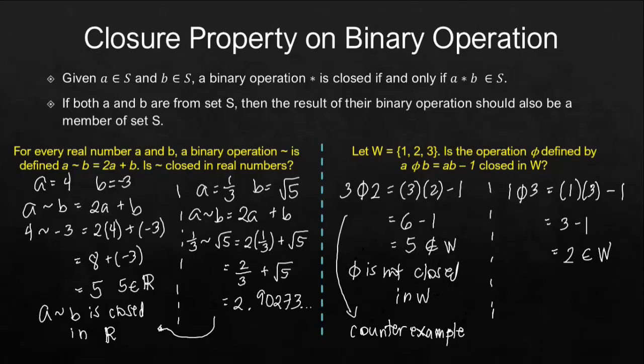So, even if there is just one example or one counterexample that will disprove the closure of the binary operation in a set, then that binary operation is not closed anymore.